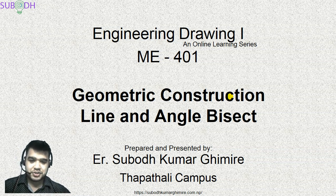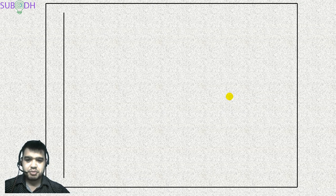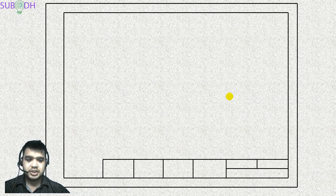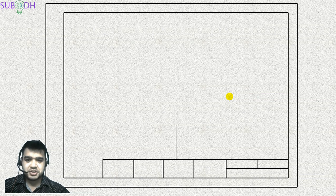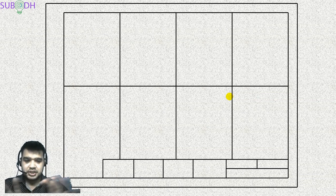Drawing paper management includes making a borderline and title block with designated distances. We can make few divisions so that our drawing is adjusted properly in our space.